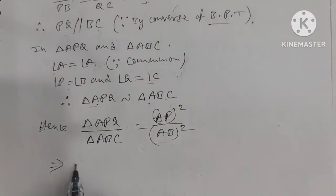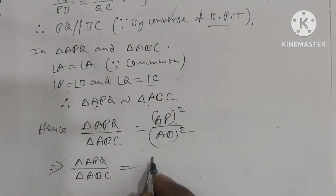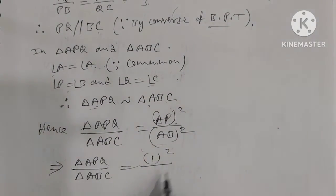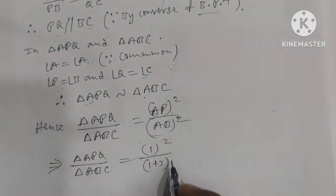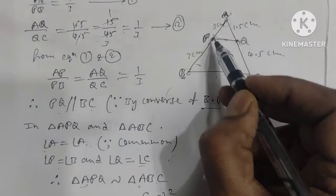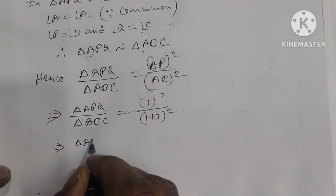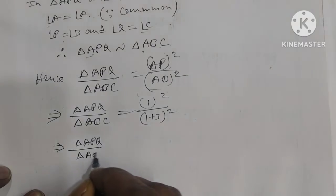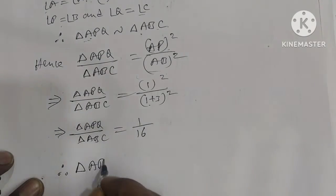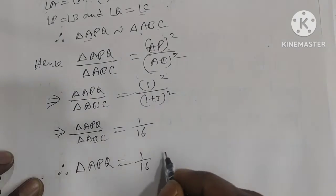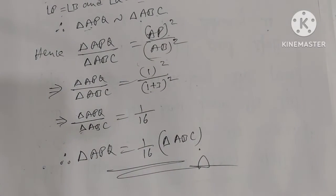AP = 1 cm, AB = AP + PB = 1 + 3 = 4 cm. So area of triangle APQ by area of triangle ABC = 1² / 4² = 1/16. Therefore, area of triangle APQ = (1/16) × area of triangle ABC. Hence proved.